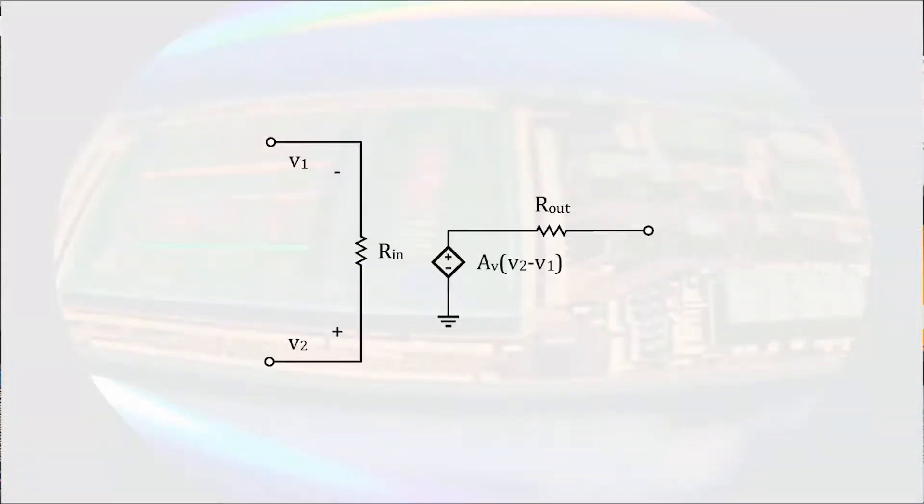When we have to make an adjustment to the ideal model, it is helpful to remember the Thevenin equivalent of the op-amp. This can help us to remember both the ideal model and the reason for the assumptions.